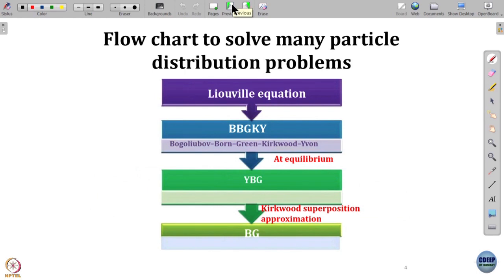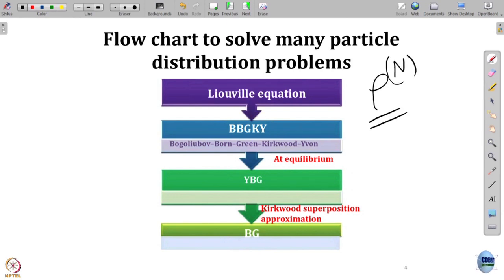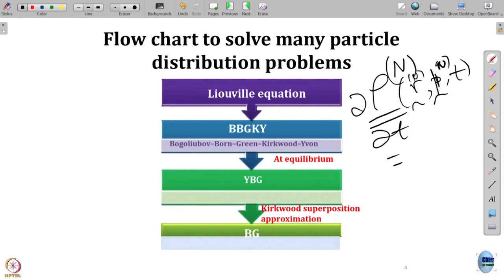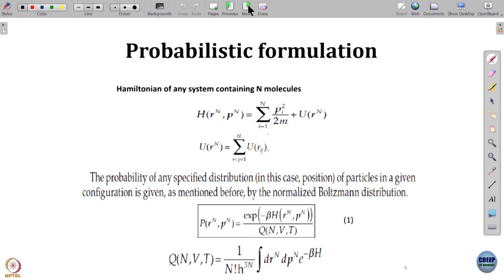The basic flow chart starts with what is called the Liouville equation — the equation of motion for the n-particle distribution in position and time. This is what Boltzmann tried to do. The equation of motion for n particles is the Liouville equation via the Liouville operator. That can be reduced into an equation called the BBGKY equation, which goes to the equilibrium Born-Green equation. Now, how do we talk about radial distribution functions?